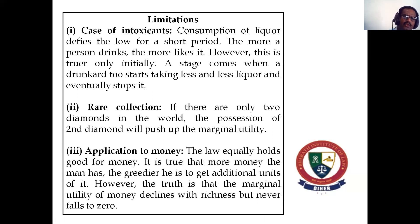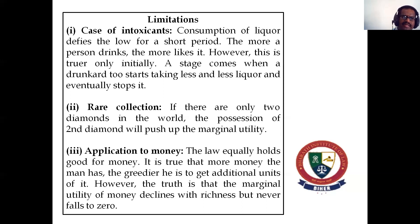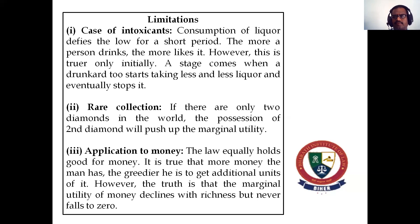The consumption of liquor defines the law over a short period — the more a person drinks, the more they start taking less and less liquor and eventually stop. Regarding a rare collection — if there are only two diamonds in the world, the possession of a second diamond will push up the marginal utility. That is called the identical value of the product; the product has a superior value.